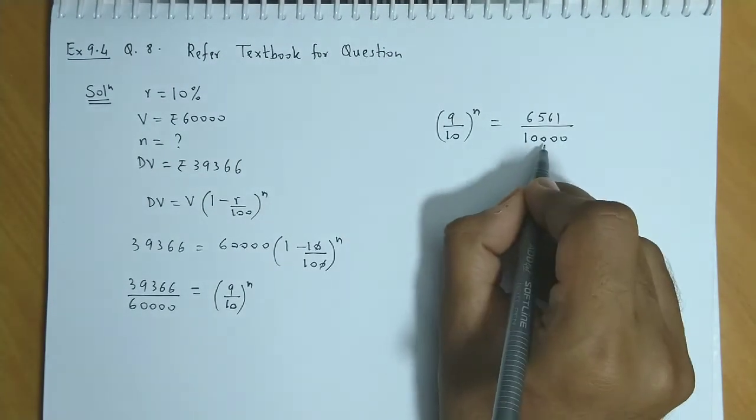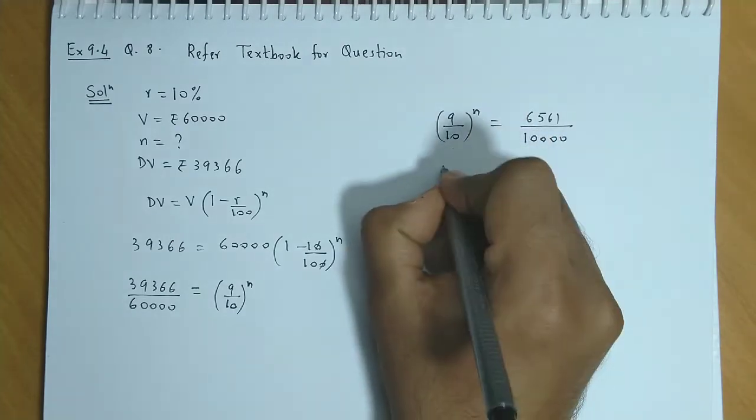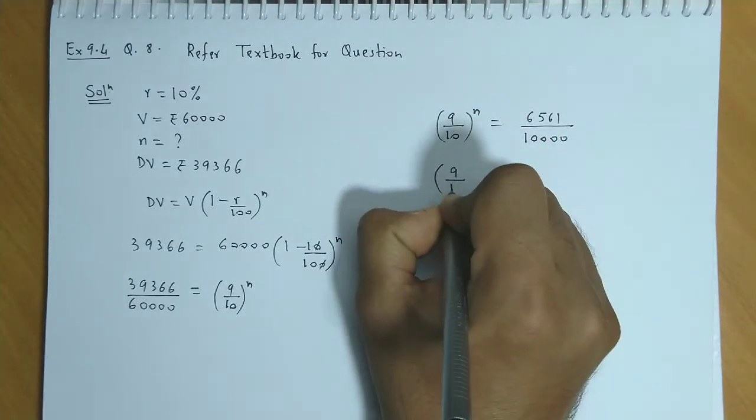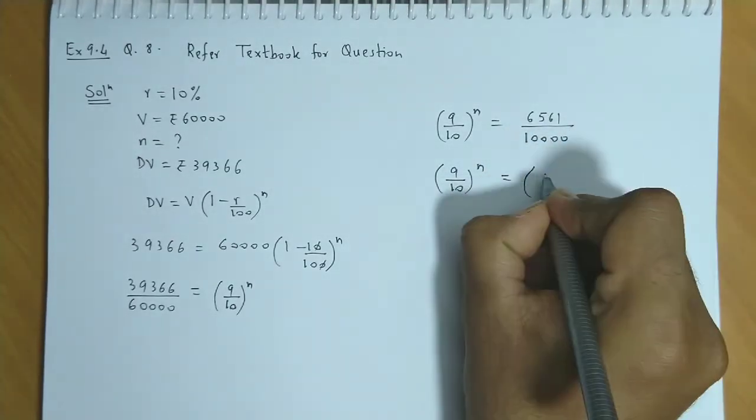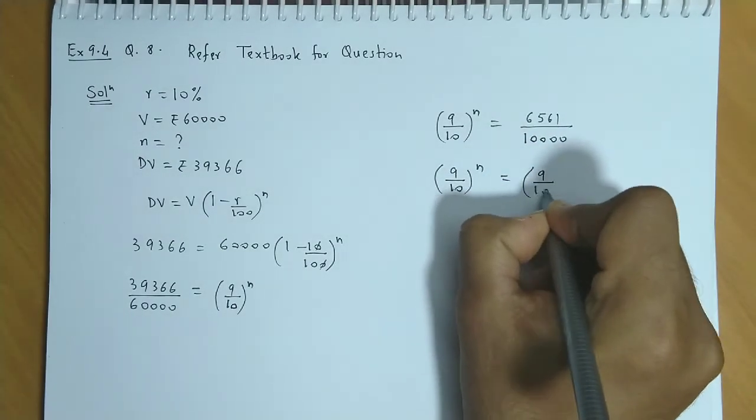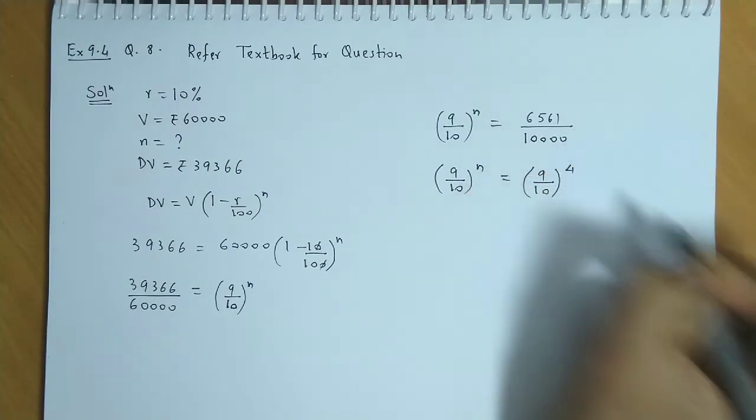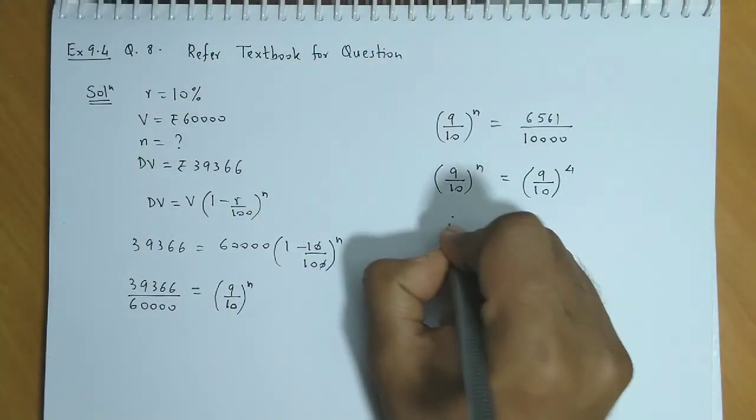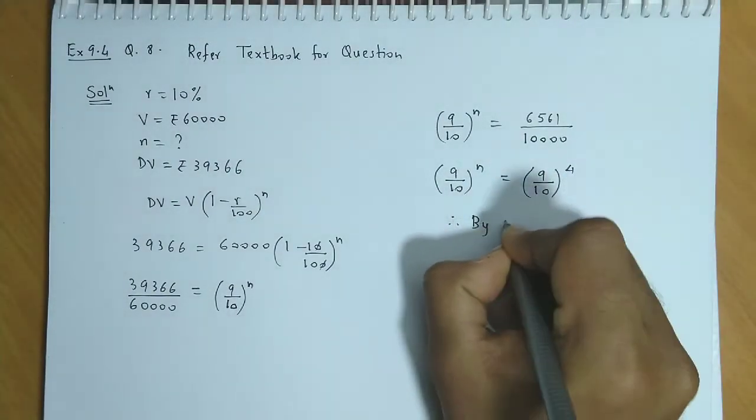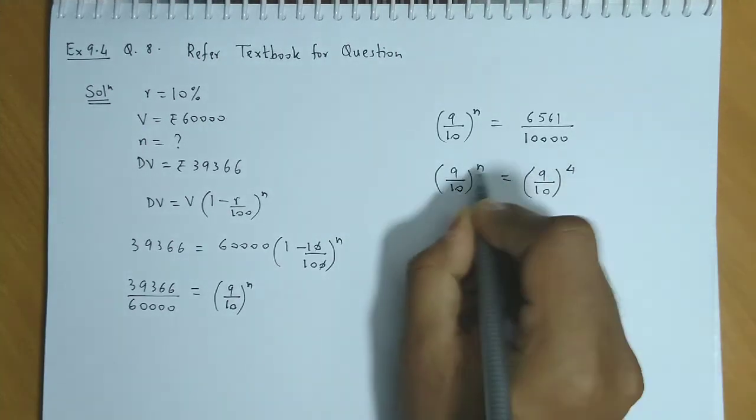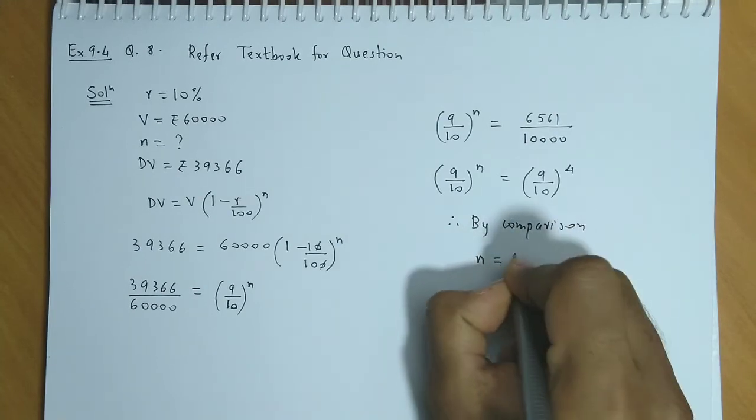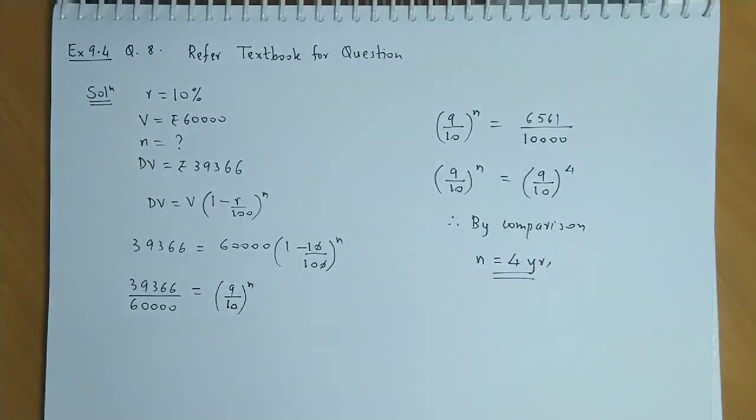Now, this is 9 raised to 4 and this is 10 raised to 4. So, we have 9 upon 10 raised to N is equal to 9 upon 10 raised to 4. Therefore, by comparison of both sides, we get N is equal to 4 years.